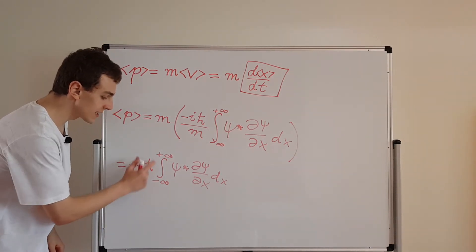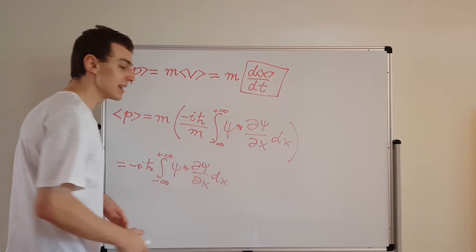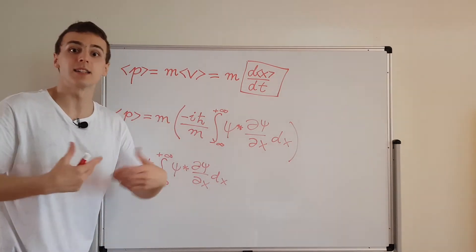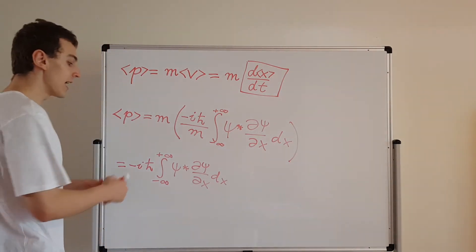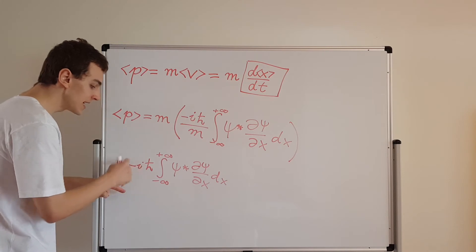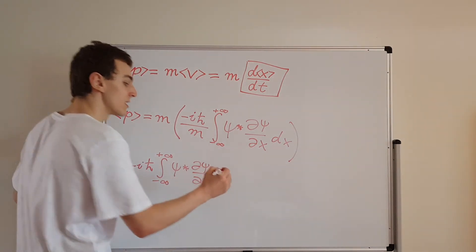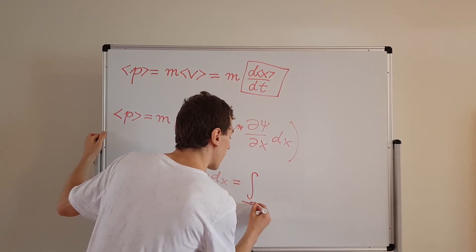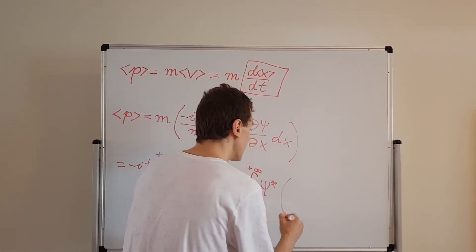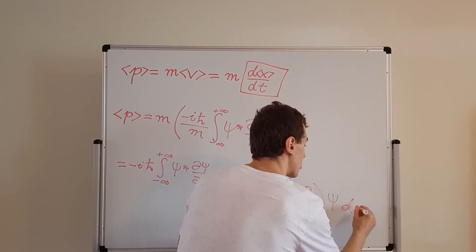What I'm going to do is move these constants towards the inside and turn this into an integral sandwich. The integral is like the bread of the sandwich, the psi and psi star terms are like the lettuce, and everything on the inside — which we'll call the operator — is like the tomato or the cheese inside the sandwich. We can also turn minus i into 1 over i, since dividing by i is the same as multiplying by minus i. So we get: the integral from minus infinity to plus infinity of psi star, times h-bar over i times d/dx, times psi, integrating with respect to x.